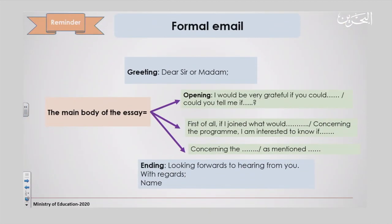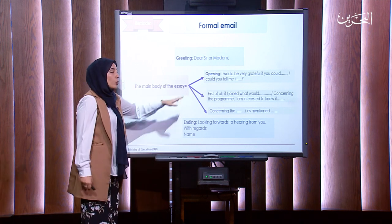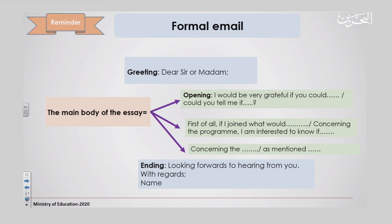So let's summarize what a formal email is. In short, a formal email starts with a greeting: dear sir or madam. The main body — you start with an opening statement and directly get to the point: I would be very grateful if you could — and you present your inquiries. Then you state them in more detail in an organized order. If you have more than one question, you start with: first of all... concerning the program, I am interested to know. They are straight to the point and passive. The ending: looking forward to hearing from you. With regards, then the signature — usually your first and last name.